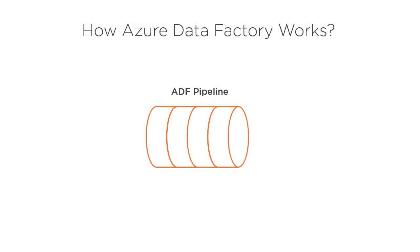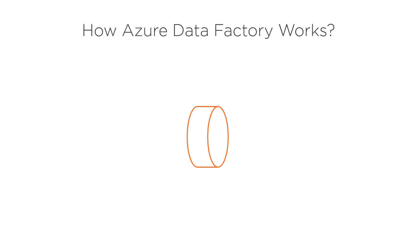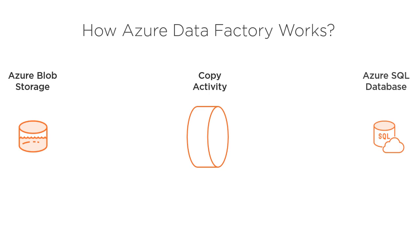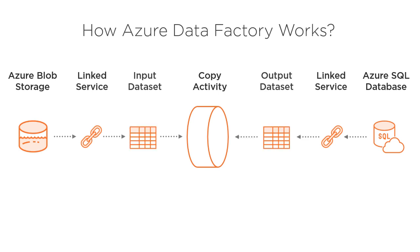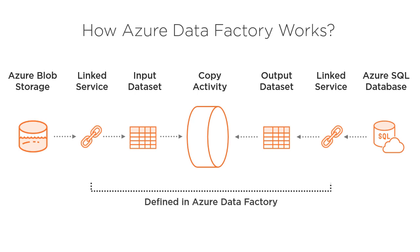A data factory pipeline is analogous to an SSIS package, where each pipeline is composed of activities that together perform a task. For example, to copy data from Azure Blob Storage to Azure SQL Database, you create a copy activity. Linked services are like connection managers that define the connection information for data stores that the data factory needs to connect. You have datasets that identify data within different data stores such as tables, files, and folders. Linked services, datasets, activities, and pipelines are defined as simple JSON documents within the data factory, but you can use the data factory UI to generate the JSON.